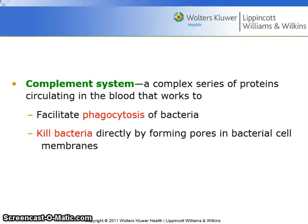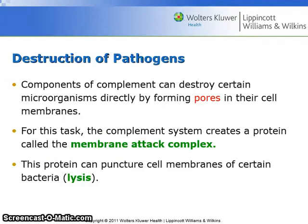The complement system is a complex series of proteins circulating in the blood that work to facilitate phagocytosis of bacteria and can kill bacteria directly by forming pores in the bacterial cell membranes. Destruction of pathogens involves components of the complement system, which can destroy certain microorganisms directly; for this task it creates a protein called the membrane attack complex. This protein can puncture cell membranes of certain bacteria. This puncturing or breaking of cell membranes is referred to as lysis.